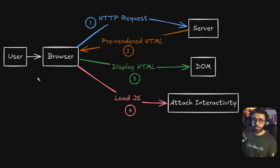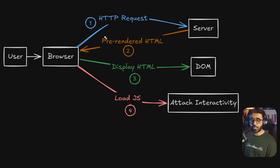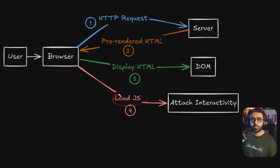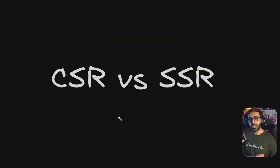Here is the usual flow for server-side rendering: the user goes to the browser and navigates to a particular page. The request goes to the server, the server sends back the pre-rendered HTML to the browser. The browser displays the HTML using the document object model, then loads and parses the JavaScript, and runs it, attaching any relevant listeners or interactivity.